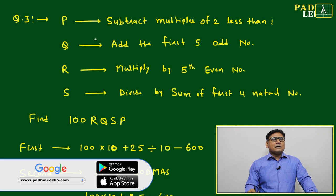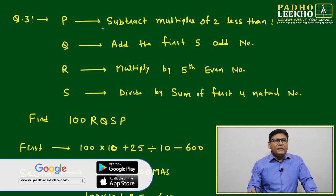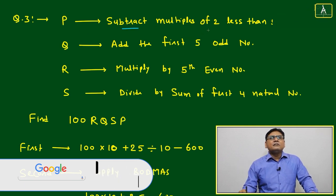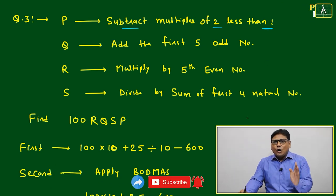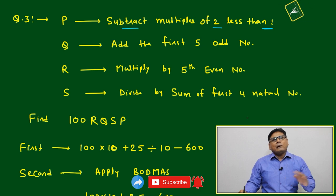Just we will come to question number three. P represents subtract multiples of 2 less than 50. Means less than 50, how many multiples you have, you have to subtract.